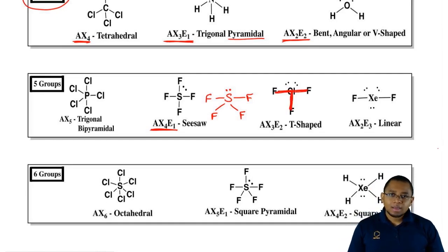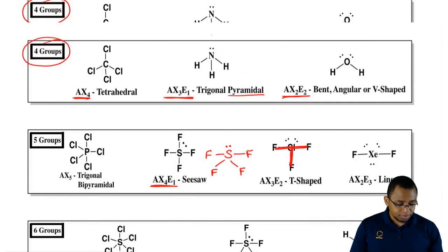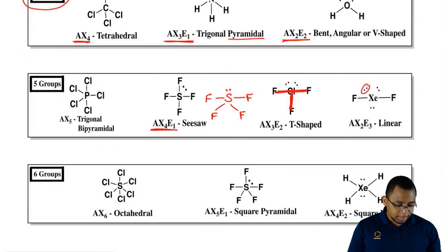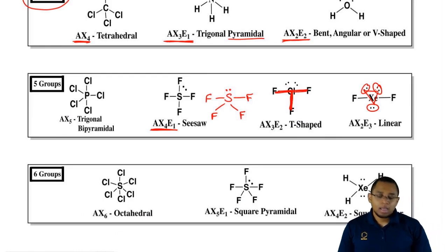Here AX2E3 is actually linear. It's just like the AX2 up here. It's linear as well. All the lone pairs decide to orient themselves in this way, kind of forming like a triangle, and then the surrounding elements on either side.